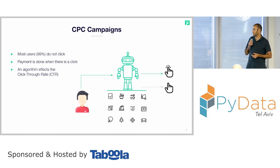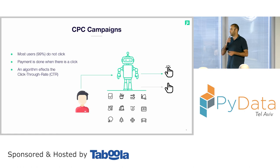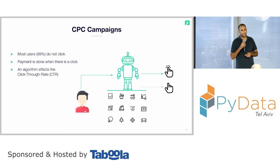A naive basic example: given a specific user, and given a model that knows something about the attributes and something about the user, it will try to fit a relevant ad, which will eventually get to a prediction or a non-prediction event.